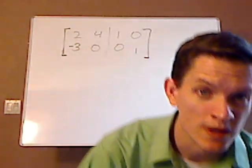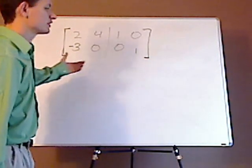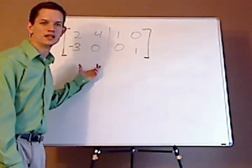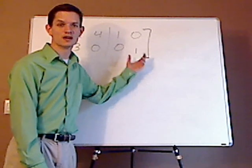Alright, the setup is always the same. You have your matrix that you're trying to find the inverse of and then you have the identity matrix here.